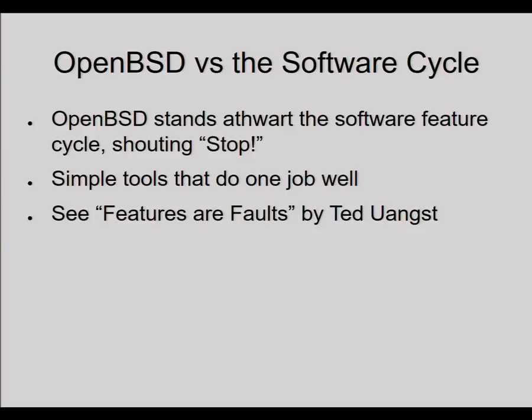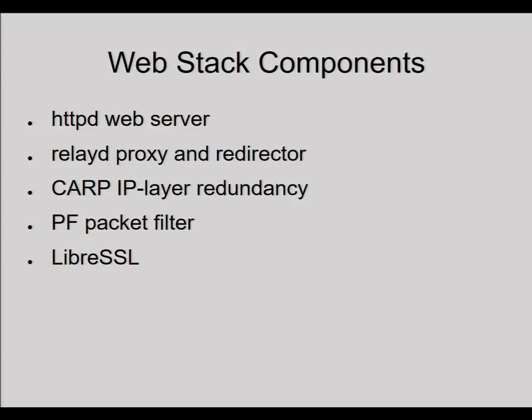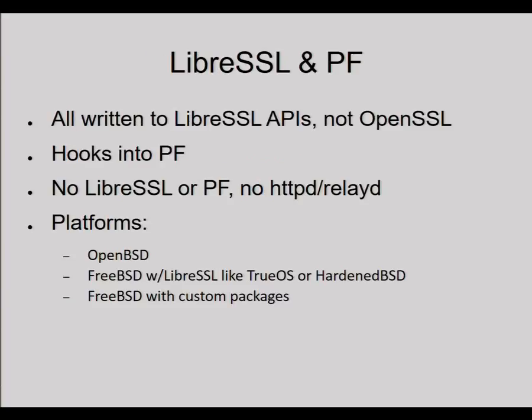There's the HTTPD web server — my only serious complaint about the web stack is the name, because if you go to Google and ask for help with HTTPD you're basically doomed. Add 'OpenBSD' into your query and make sure you're only looking at recent results, because the old OpenBSD HTTPD was Apache. There's also the RelayD proxy and redirector, CARP for IP layer redundancy, the PF packet filter, and all of this is built on top of LibreSSL.